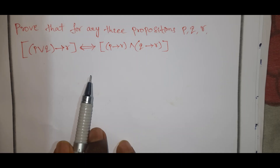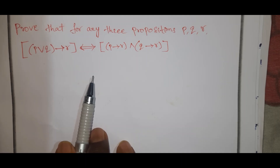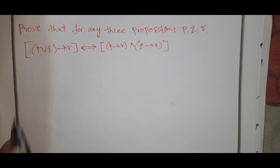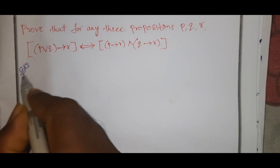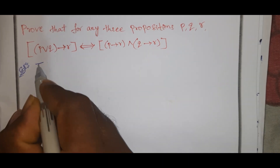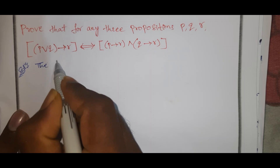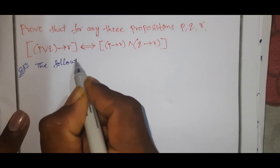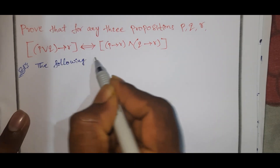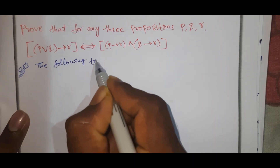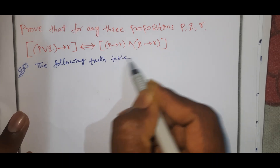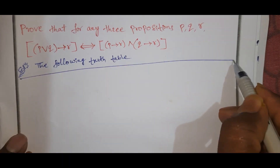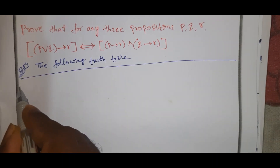We have some square statements here. Solution: construct the following truth table. The following truth table.